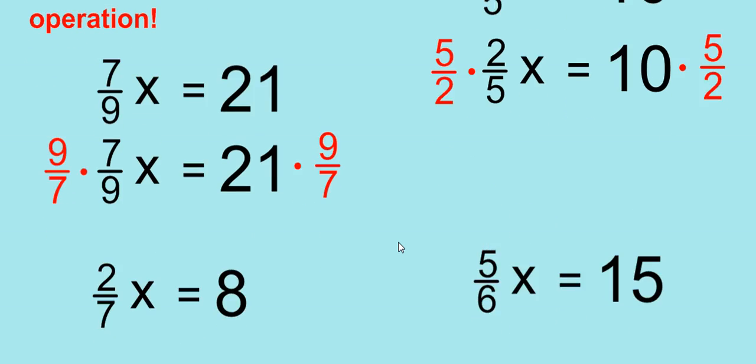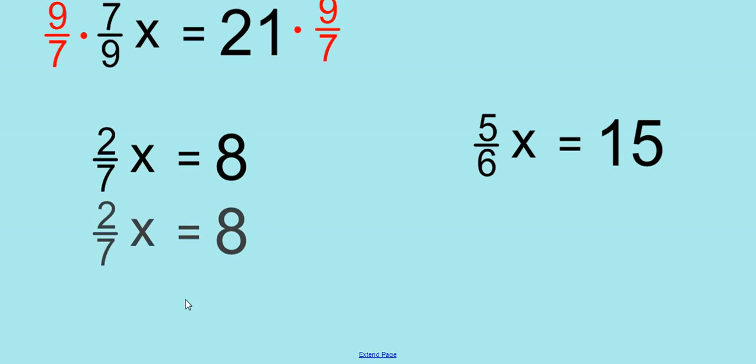Let's look at another example. What are we going to multiply 2/7 by? We have 2/7 x equals 8. Correct again, 7/2. We're multiplying by the reciprocal. Because the 7's would cross-cancel and leave us with 1's, and the 2's would cross-cancel. So we'd be left with 1 times x, or just x. But what we do to one side, we must do to the other.